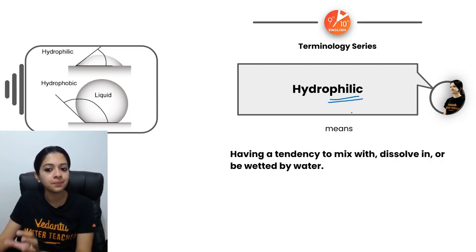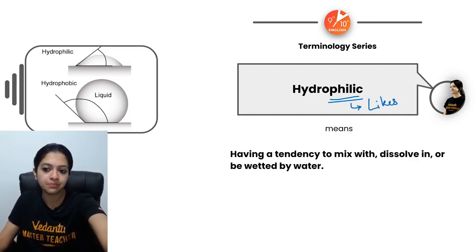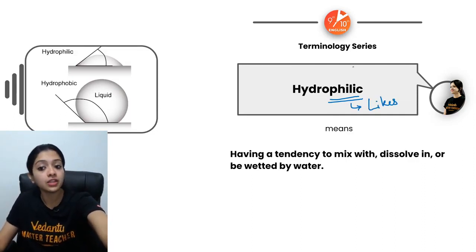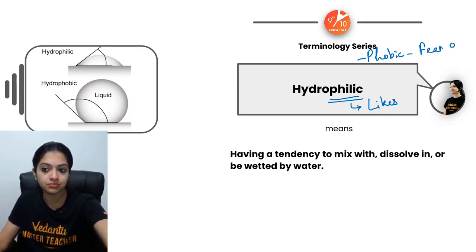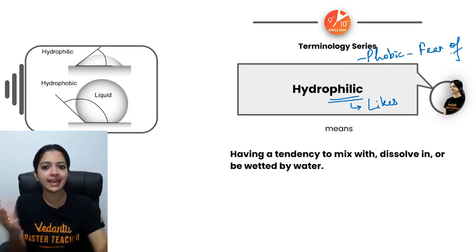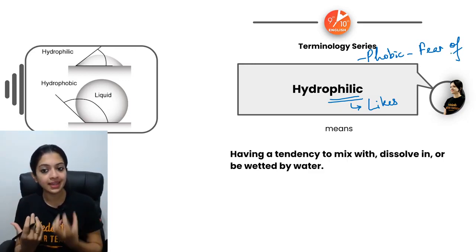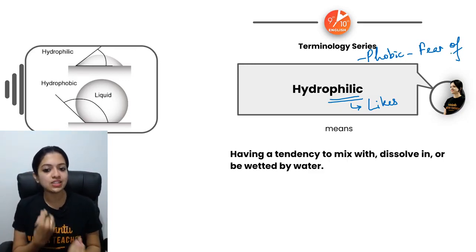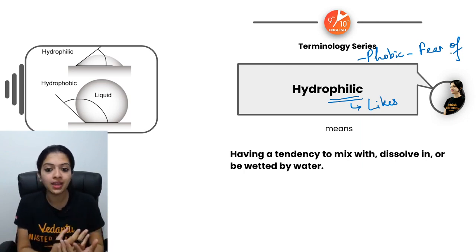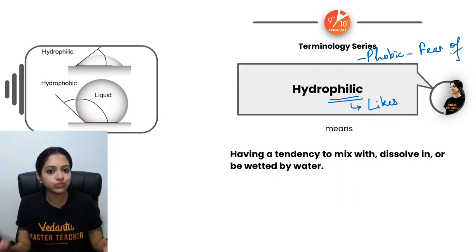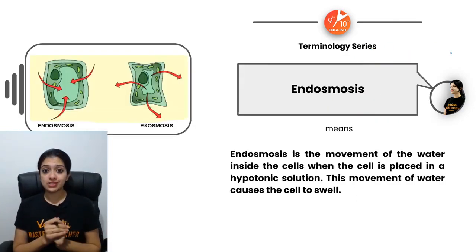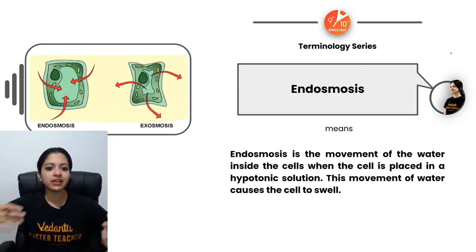Hydrophilic — remember, in science, the suffix '-philic' means liking or loving something. The opposite is '-phobic,' meaning fear of or not liking something. Hydrophilic therefore means having a liking for water — a tendency to mix with, dissolve in, or be wetted by water.